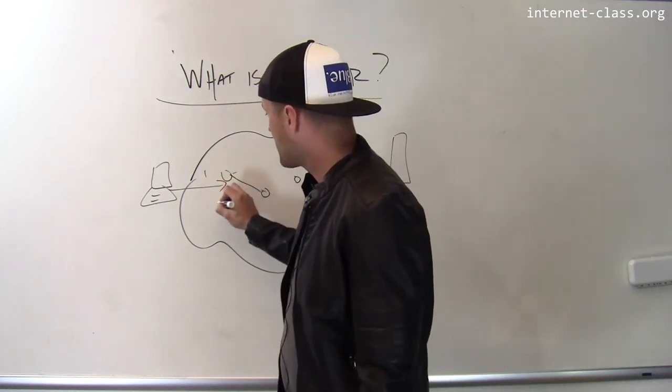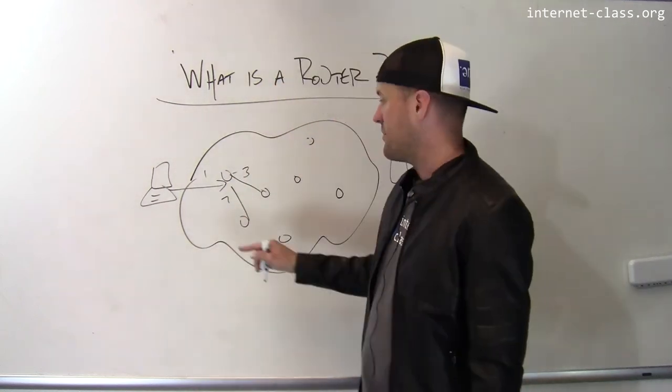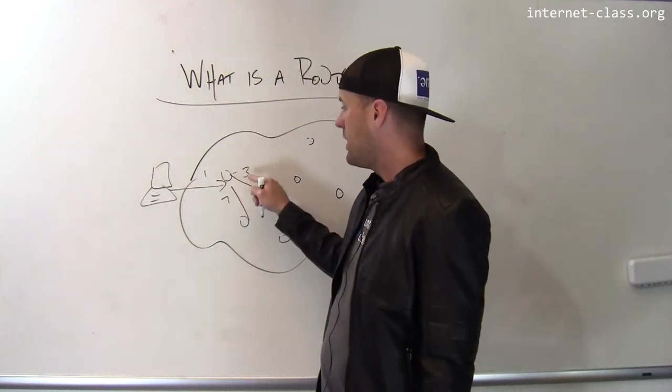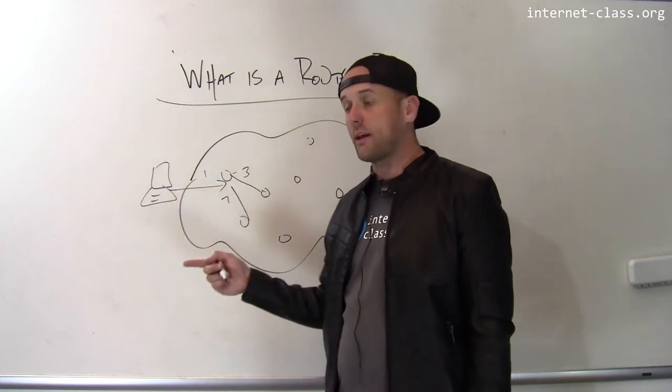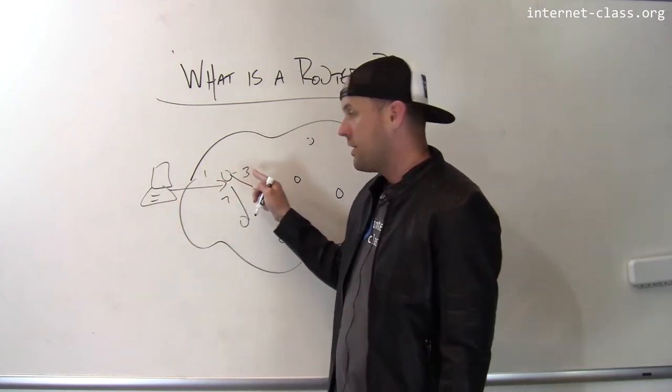which is direct packets toward their destination. Once a router has one, two, three links, then it starts to have a choice to make. When a packet arrives on link one, should I send it out on link two or link three? Similarly, when a packet arrives on link two, should I send it out on link one or link three?